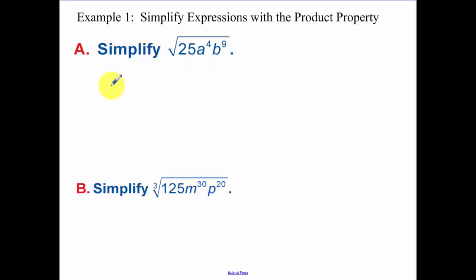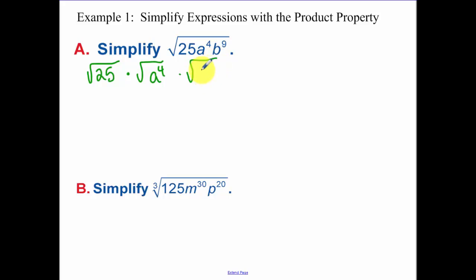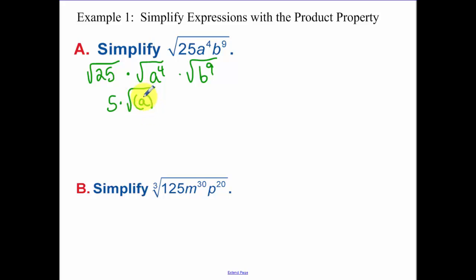So this first example, let's separate this out into our radical expressions: the square root of 25, a to the fourth, and b to the ninth. The square root of 25 — that's the easy one — that's going to be five. Now, the square root of a to the fourth: think of that like a squared, squared.